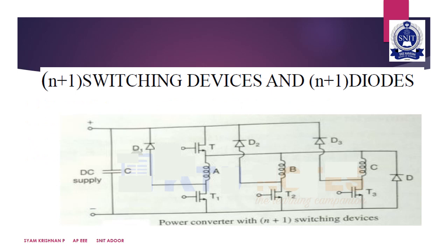The next topology uses N plus one switching devices and N plus one diodes. This circuit requires N plus one power switching devices and N plus one diodes for a motor with N phases. For energizing phase A, T and T1 are turned on. When these devices are turned off, the stored energy is fed back to the supply through D and D1.